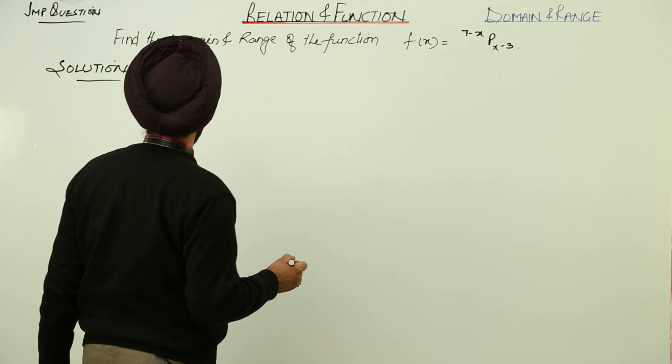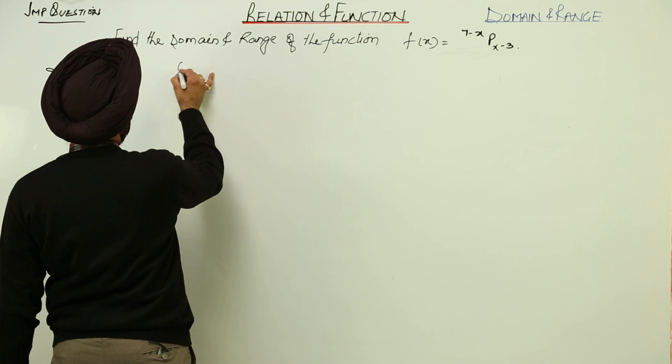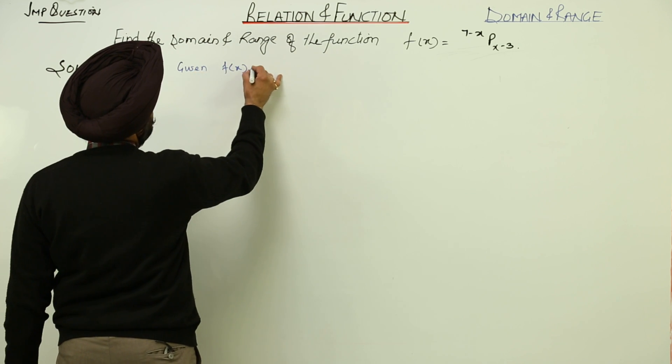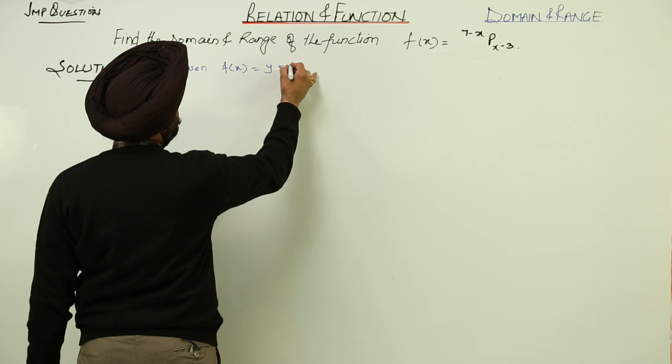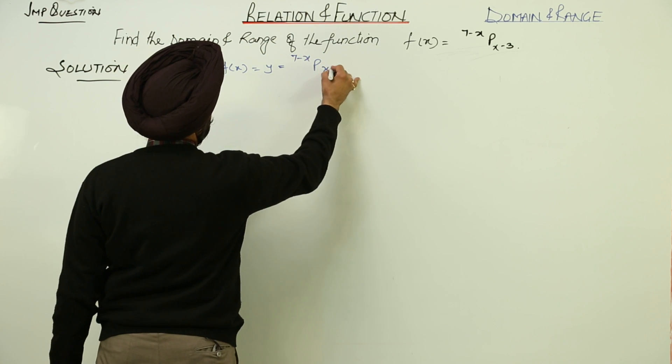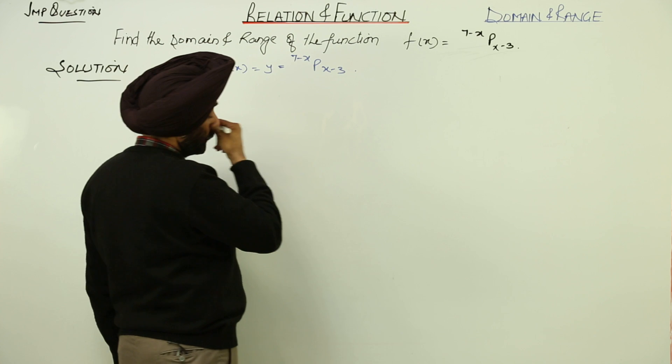In this question, the question is related with permutation. Given, f(x) is equal to 7 minus x, permutation x minus 3.